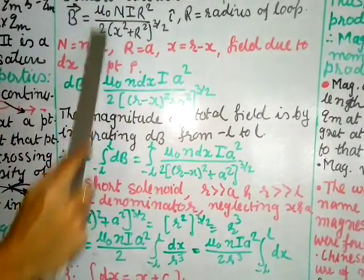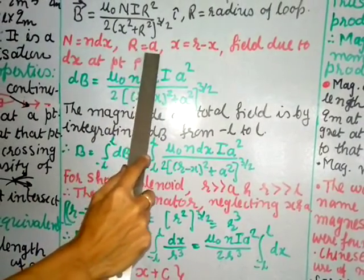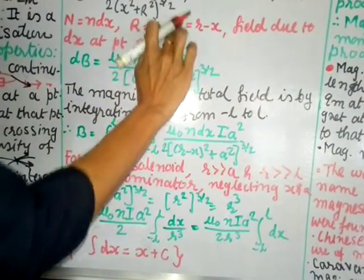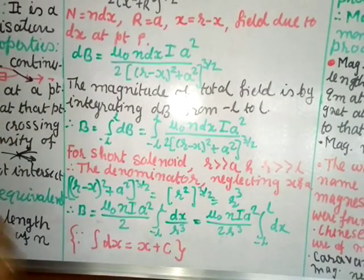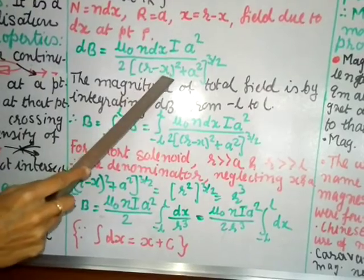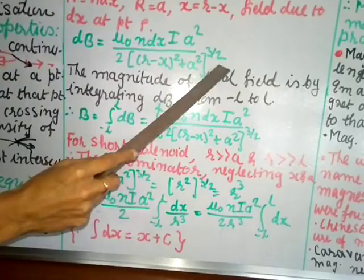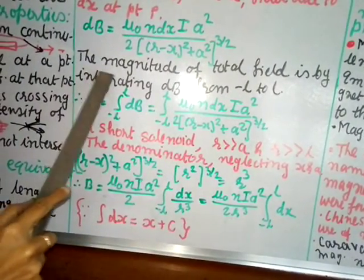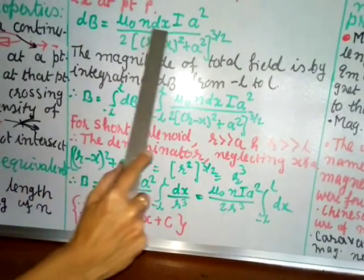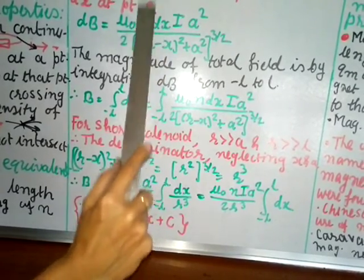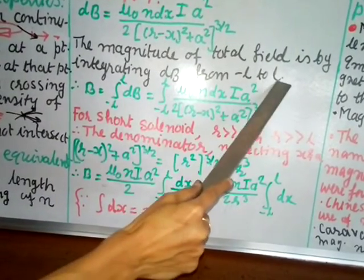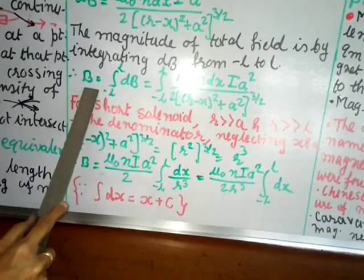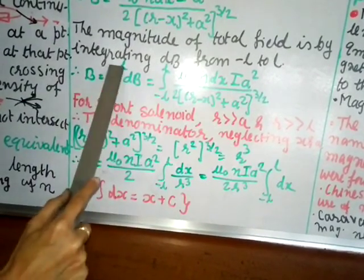So the field due to element dx at point P is: dB = μ₀·(n·dx)·i·a² / [2·((r−x)² + a²)^(3/2)]. The total magnetic field is obtained by integrating dB from −l to +l, since the solenoid has its center at origin O with half-length l on each side.